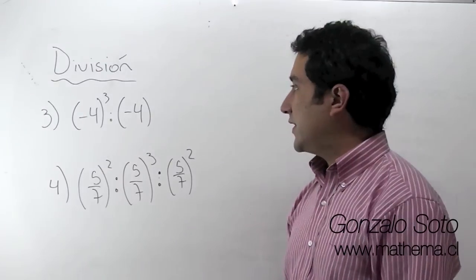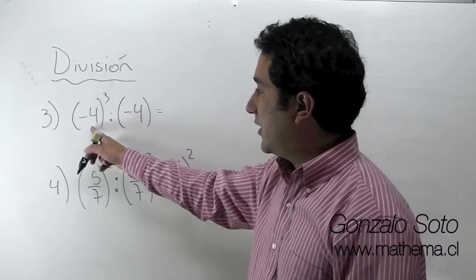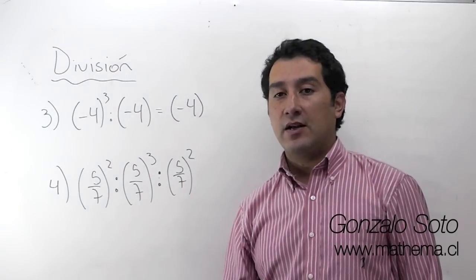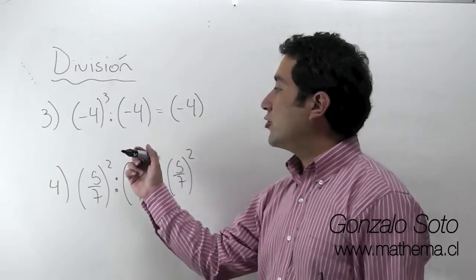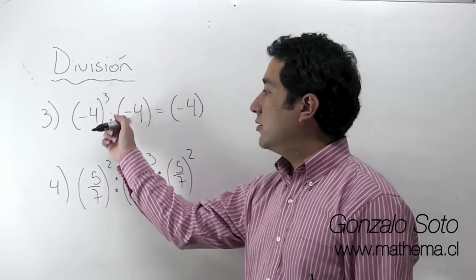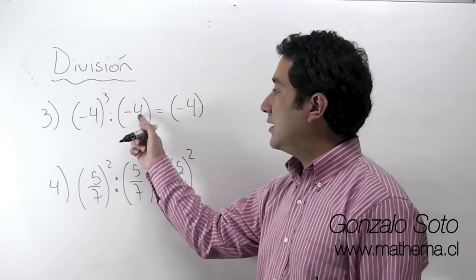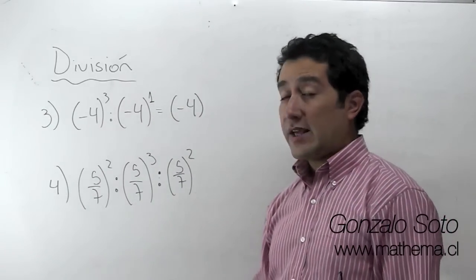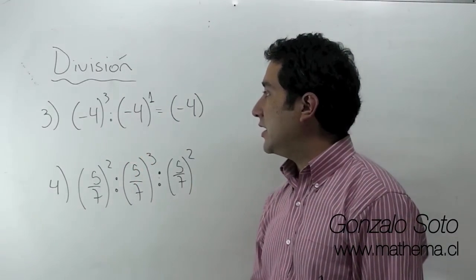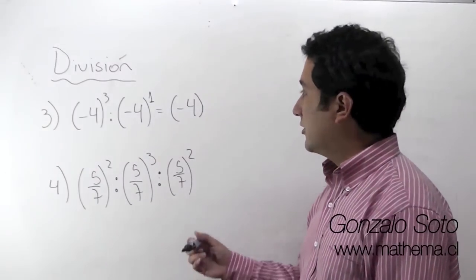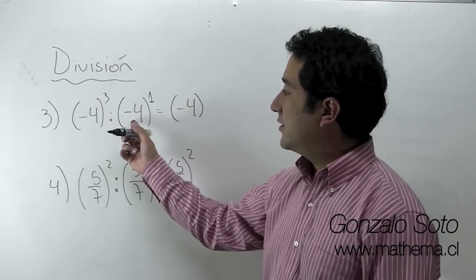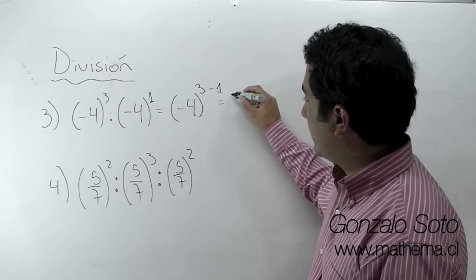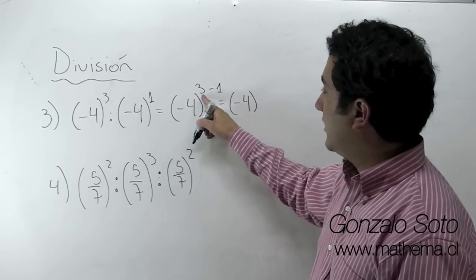En el ejercicio 3 tenemos lo siguiente: división de potencias de igual base, la base es menos 4, y restamos los exponentes. Fíjense que empiezan a aparecer los casos curiosos, porque cuando un número no tiene exponente visible, ese exponente es un 1. Entonces, división de potencias, la base es igual, por lo tanto restamos los exponentes: 3 menos 1, es 2.